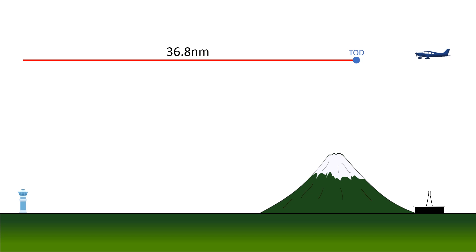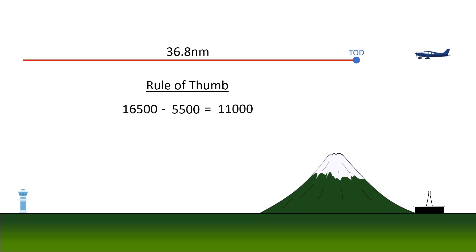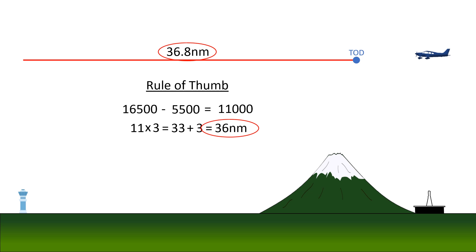Let's do our much easier rule-of-thumb calculation to compare. We need to drop from 16,500 feet to a pattern altitude that rounds to about 5,500 feet — roughly 11,000 feet of altitude loss. We take 11,000, divide by 1,000 by just dropping the last three zeros, and multiply by three to get 33. Adding the three-mile buffer gives us 36 miles for top of descent — within one mile of our more accurate, harder-to-do calculation.